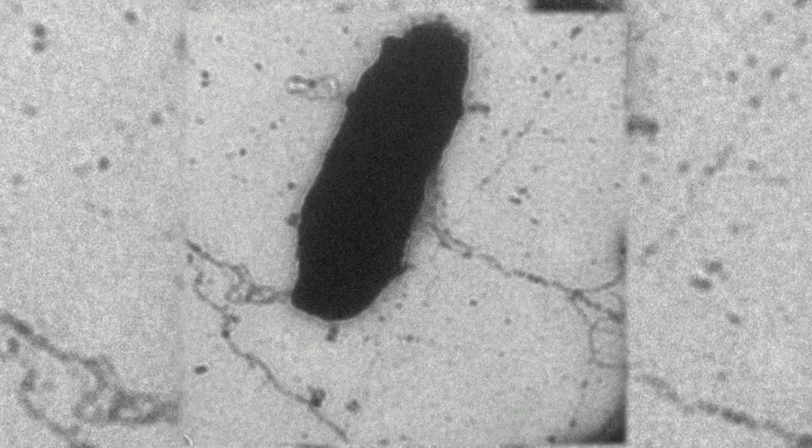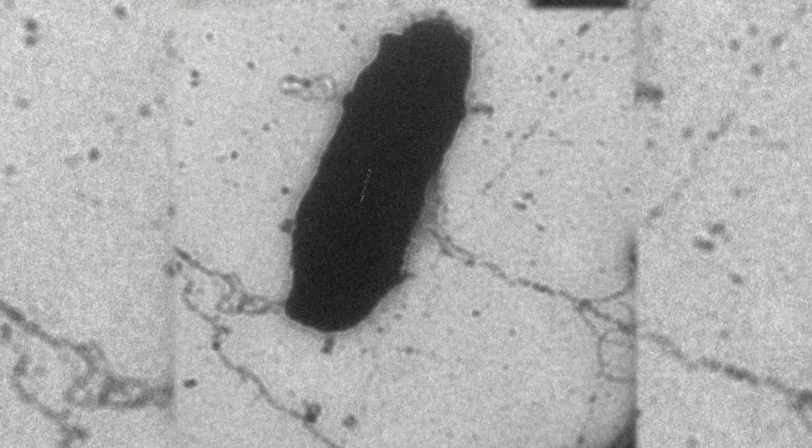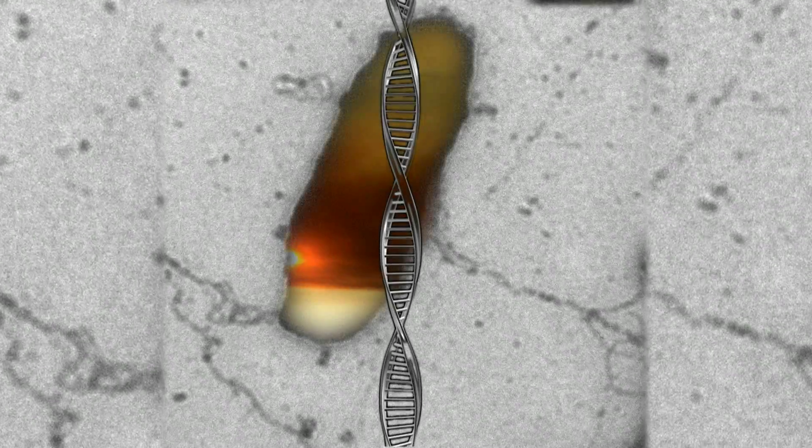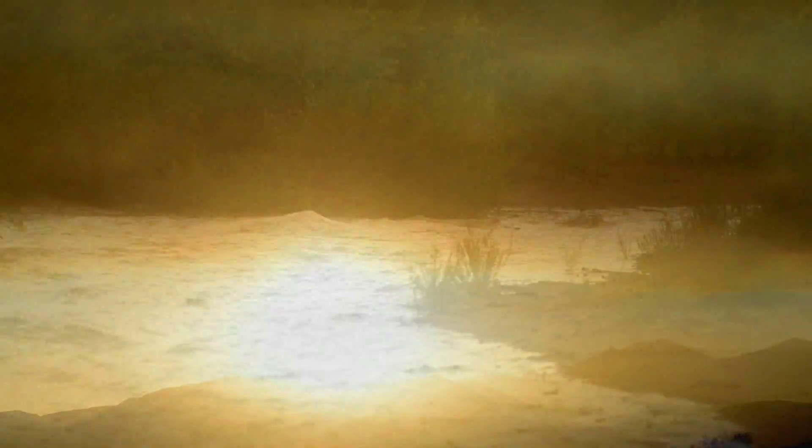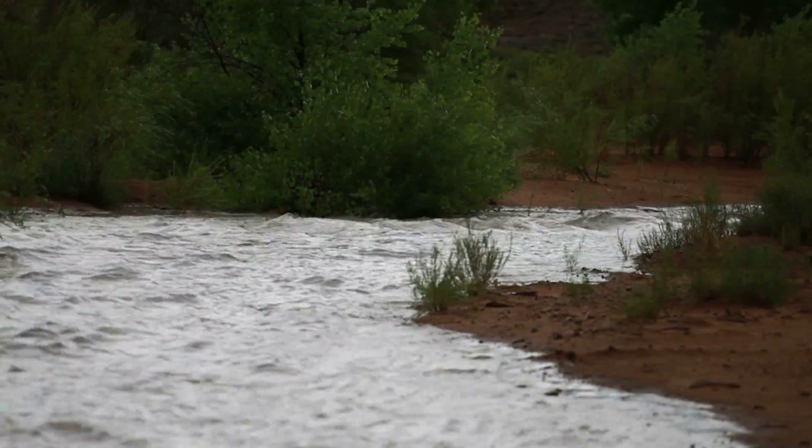The Saharan microbe contributed a different type of light sensitive protein, one that helps the microbe use the sun's energy to maintain the correct internal chemistry to survive salty lakes.